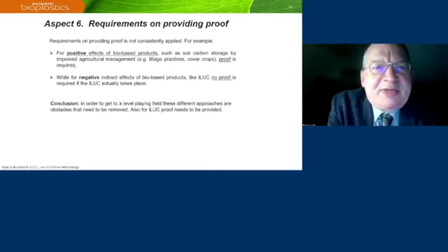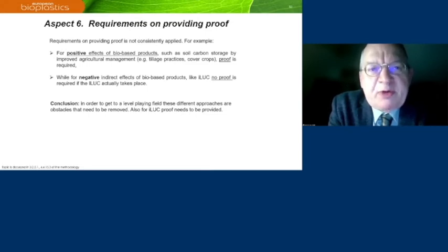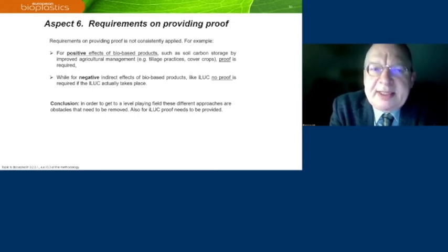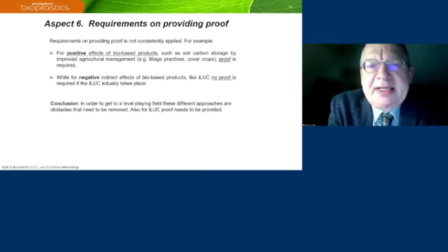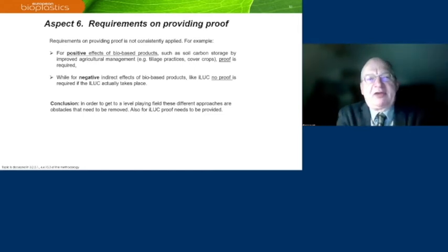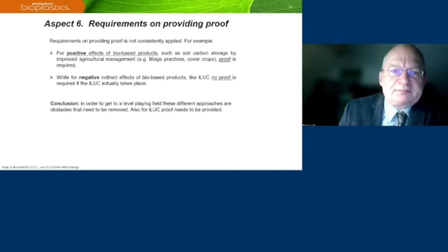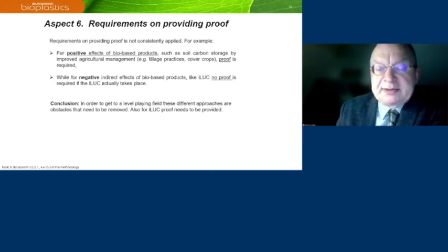Aspect number six is requirements on providing proof. For positive effects of biobased products, such as soil carbon storage by improved agricultural management — for instance by improved tillage practices or the use of cover crops — proof is required. That is fine. But for negative indirect effects of biobased products like indirect land use chains, no proof is required that the indirect land use chains actually takes place. In order to get a level playing field, these different approaches need to be removed. In practice, I think proof should also be provided for indirect land use chains before you can apply that.